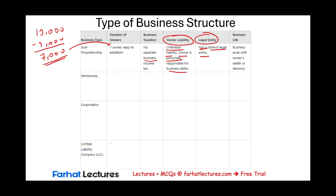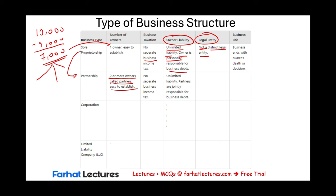Now, a partnership. There are many types of partnerships, and we'll look at them in more depth in the partnership chapter. For now, a partnership obviously involves more than one person — two or more owners called partners — and is also easy to establish. Sole proprietorship and partnership are largely the same, except you have more people involved. There is no separate business income tax, just like a sole proprietorship. That $7,000 profit is spread among the various owners. The simplest type is a general partnership, where partners have unlimited liability and are jointly responsible for the business.